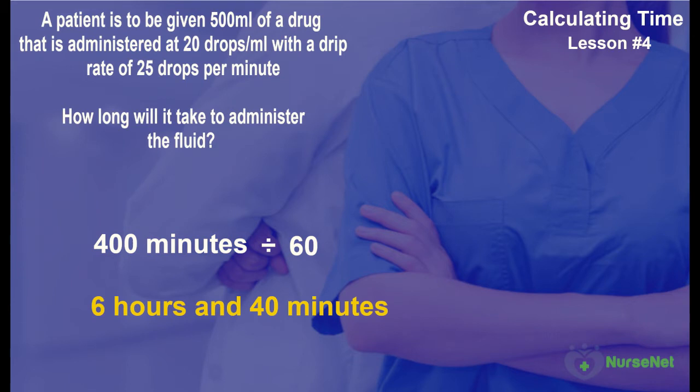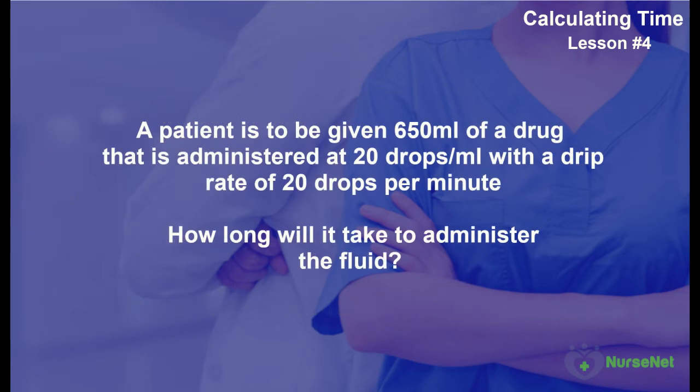Let's do another one together. A patient is to be given 650 milliliters of a drug that is administered at 20 drops per milliliter, with a drip rate of 20 drips per minute. How long will it take to administer the fluid?